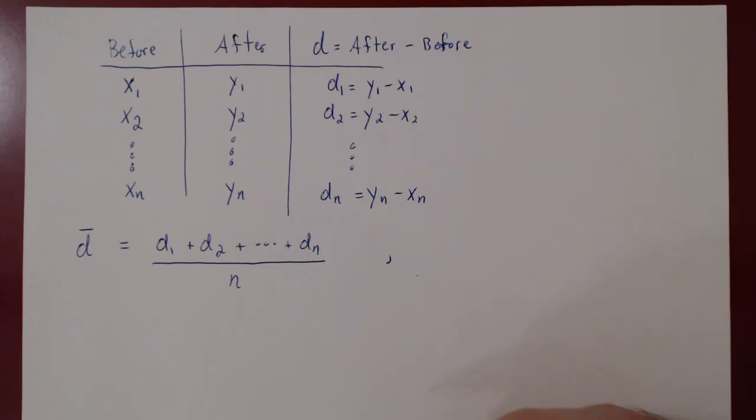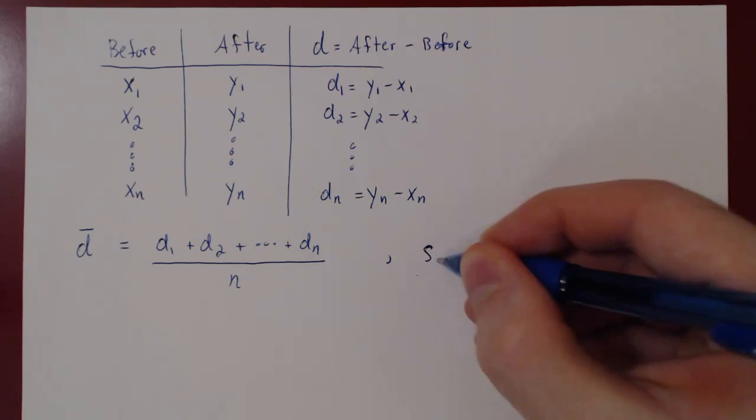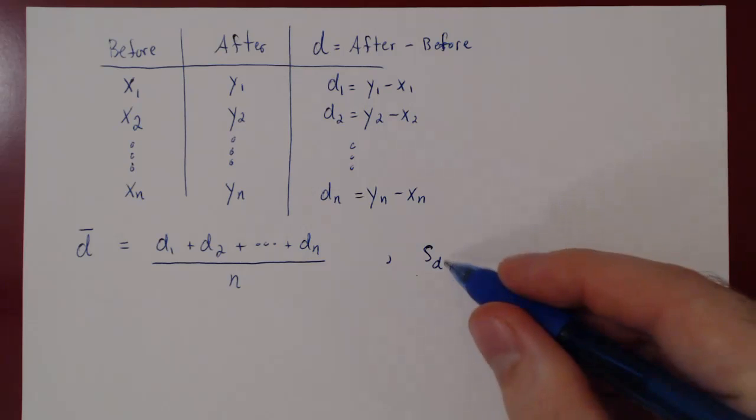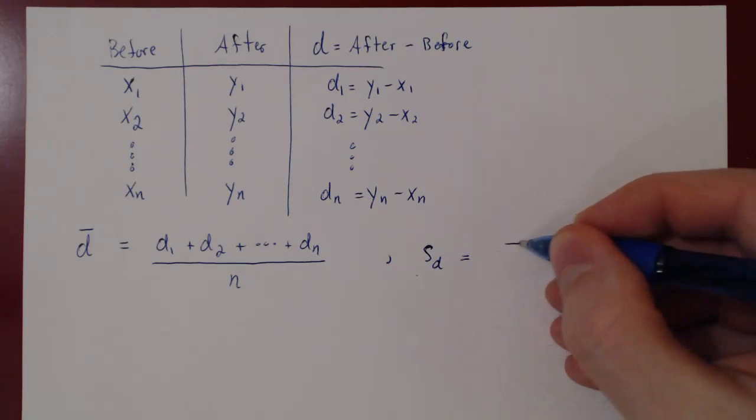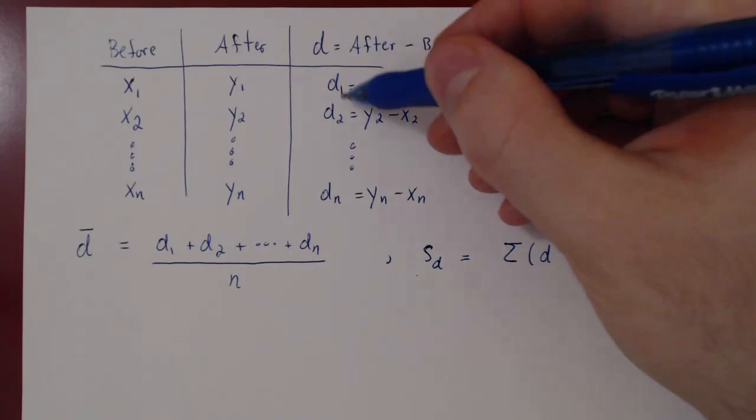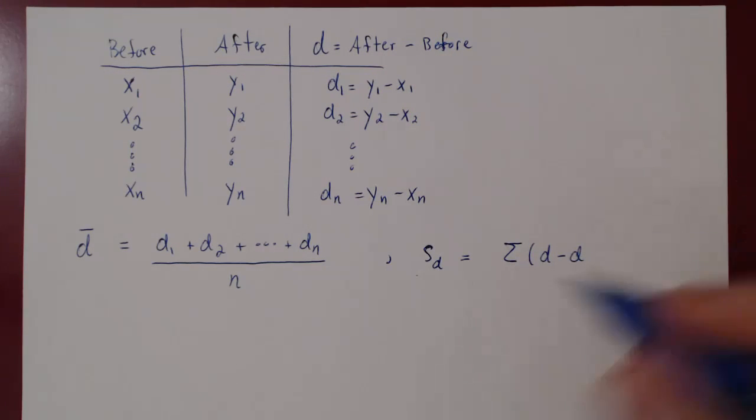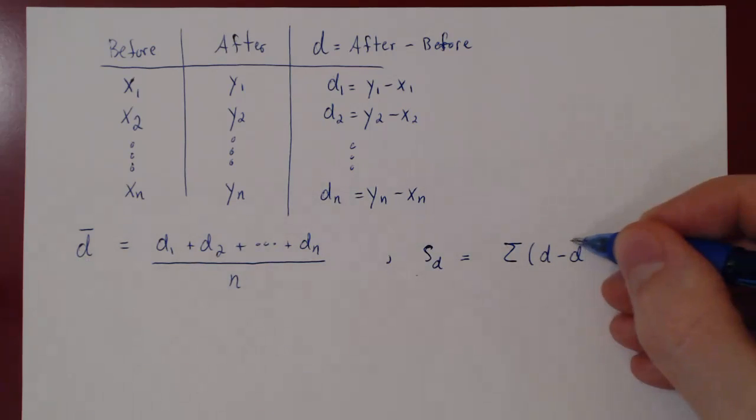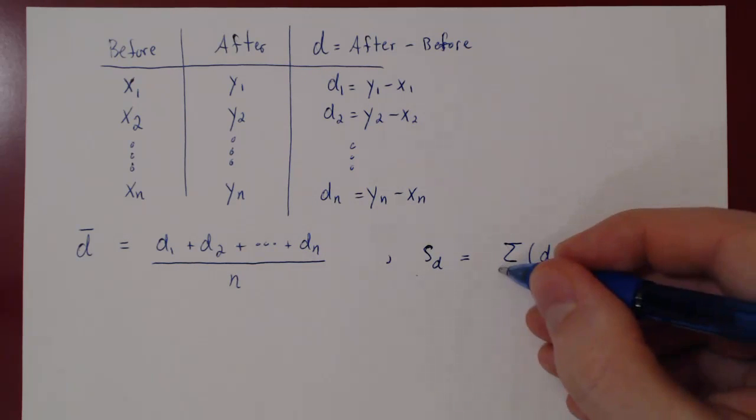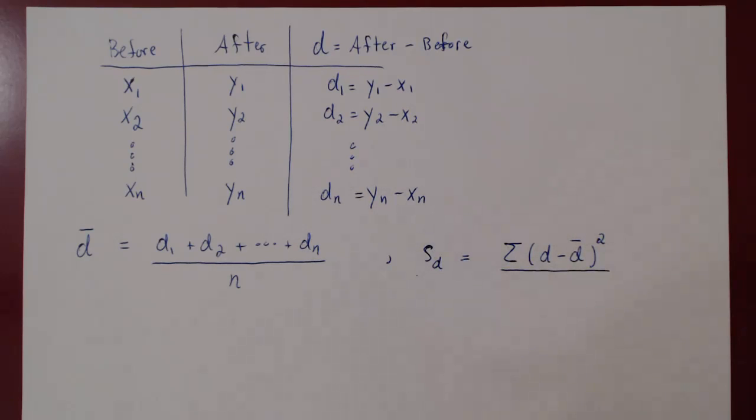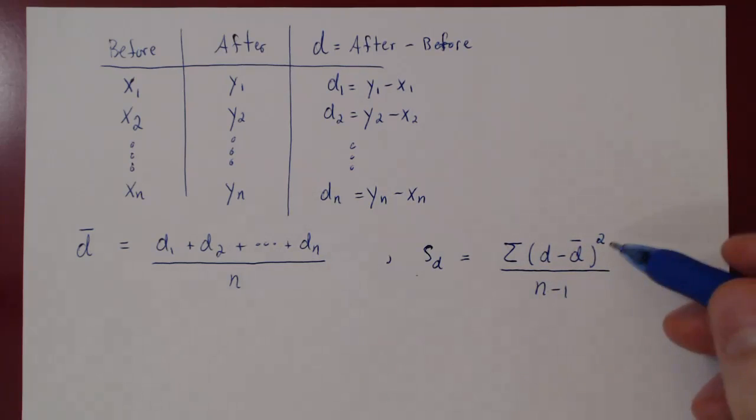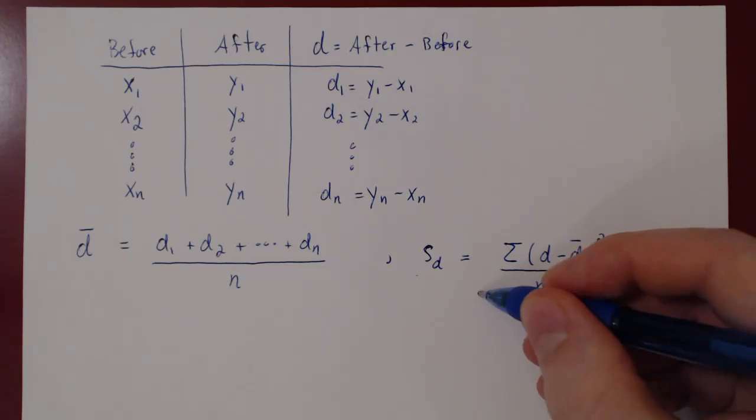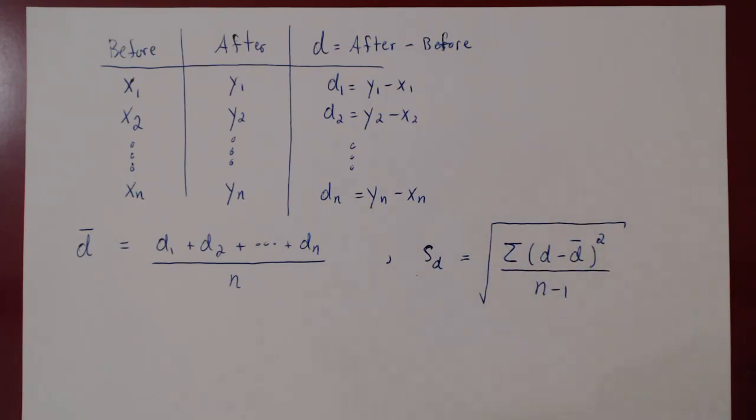So from this we obtain our sample mean difference, and then we will find our sample deviation for the differences. So we can call this sd, s for sample deviation, d for differences. And as always, if you remember, we sum for each value of d, the value, so d1, d2, and so forth, minus the average difference. But we sum the differences squared. We divide by, since we have the sample standard deviation, the sample size, we have n values minus 1. This, of course, gives the sample variance, the square root of that gives the sample standard deviation for the difference.